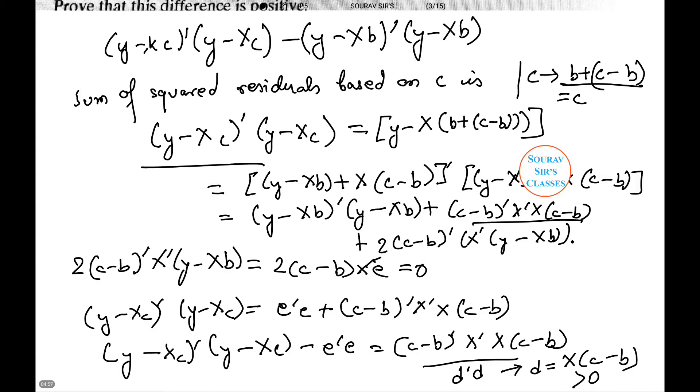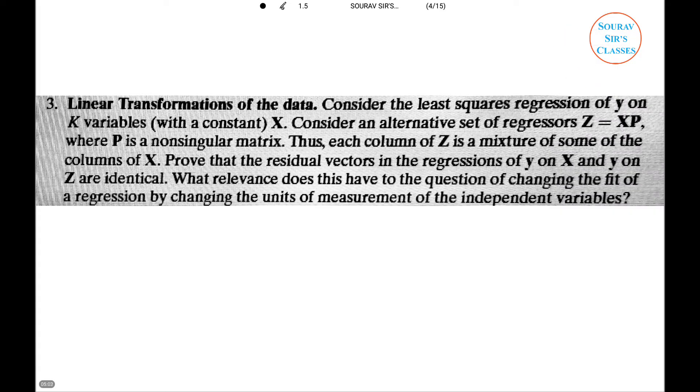Now we see another question: Linear Transformations of the data. Consider the least squares regression of y on K variables with a constant X. Consider an alternative set of regressors Z equals XP, where P is a nonsingular matrix. Thus each column of Z is a mixture of some of the columns of X. Now we need to prove, I'm highlighting this, that the residual vectors in the regressions of y on X and y on Z are identical.